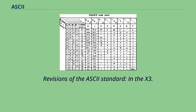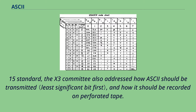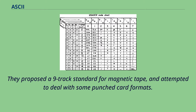Revisions of the ASCII standard, in the X3.15 standard, the X3 committee also addressed how ASCII should be transmitted and how it should be recorded on perforated tape. They proposed a 9-track standard for magnetic tape and attempted to deal with some punched card formats.